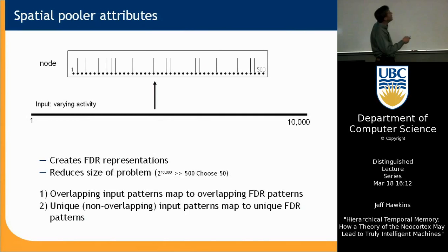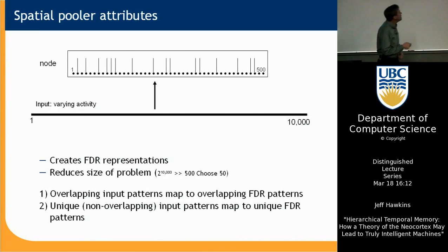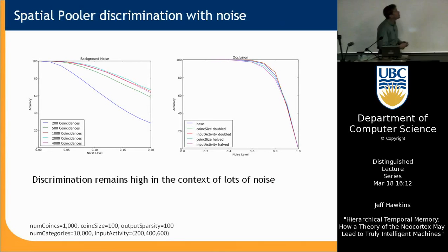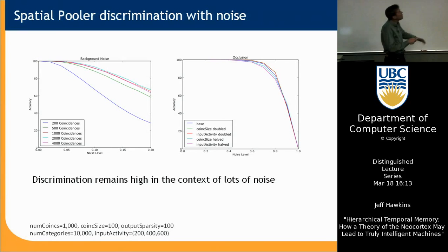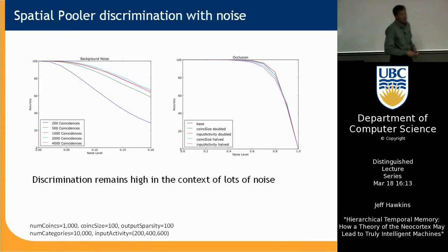What we want is to take an incredibly complex input — 10,000 bits of varying activity — and map it onto a much smaller space of, say, 50 out of 500 active columns. This reduces the problem from 2 to the 10,000 down to 500-choose-50. Importantly, overlapping patterns in the input space — things spatially similar — are also overlapping in the FDR space, and things that don't overlap down here don't overlap in the FDR space. We've tested this extensively: you can pass many discriminable patterns and test discrimination before and after putting it through the FDR spatial pooler — the answer is yes, it works. It's very immune to background noise and occlusion.